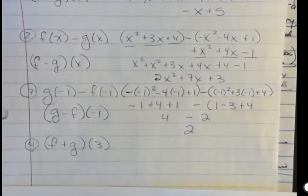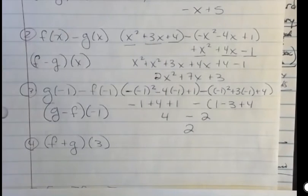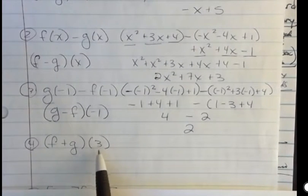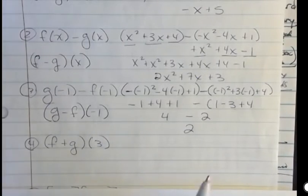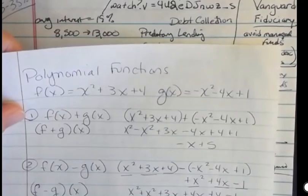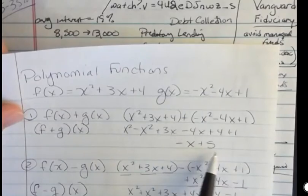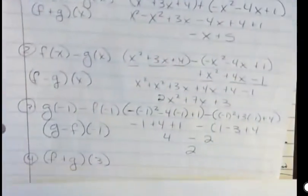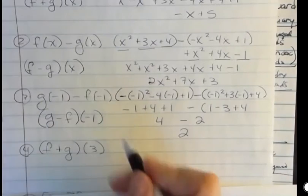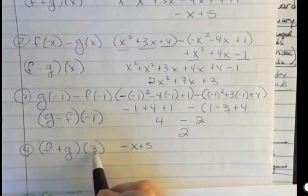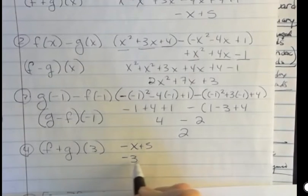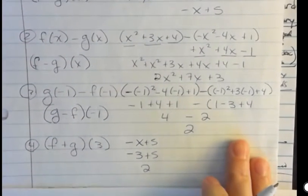So if I'm giving you this one, f plus g of 3, now I'm saying add those two functions together and replace the 3 with the x with the 3. Now I can do this first. Add them together and then replace it with 3. And I'm going to show you up here when we first started, number 1, we already added those together, right? When I added the two functions together with x in it, I got negative x plus 5. So I'm going to use that result down here and say, well when I added those together, I got negative x plus 5. If I replace the x with 3, I get negative 3 plus 5, which is 2. Nice.